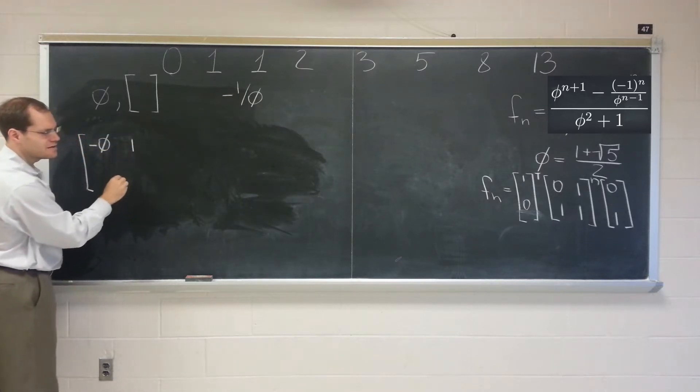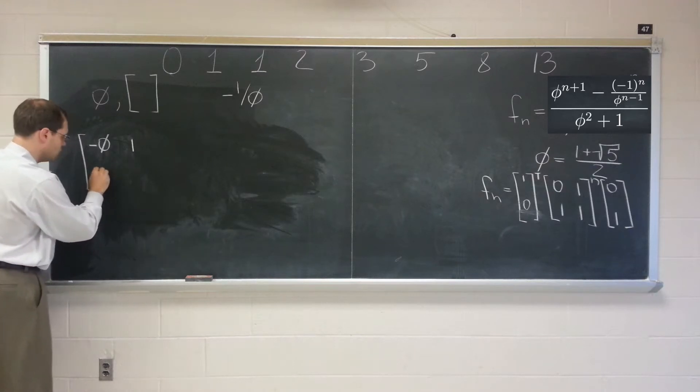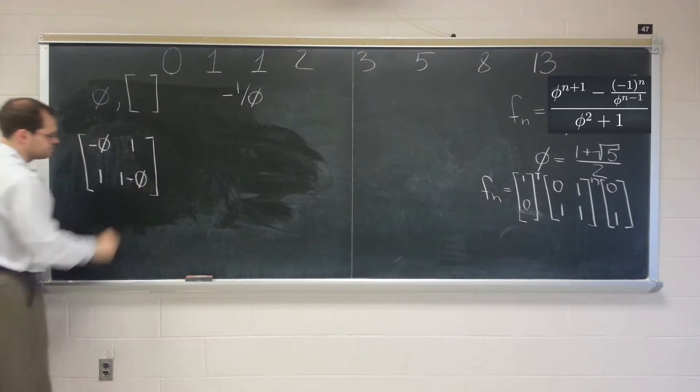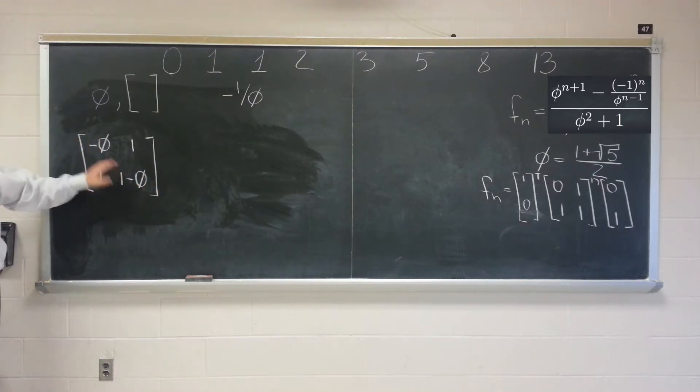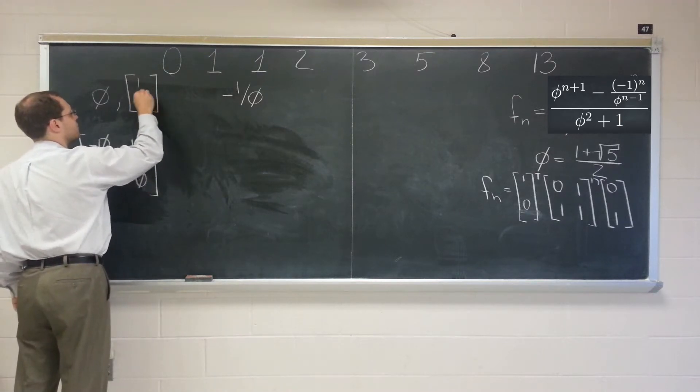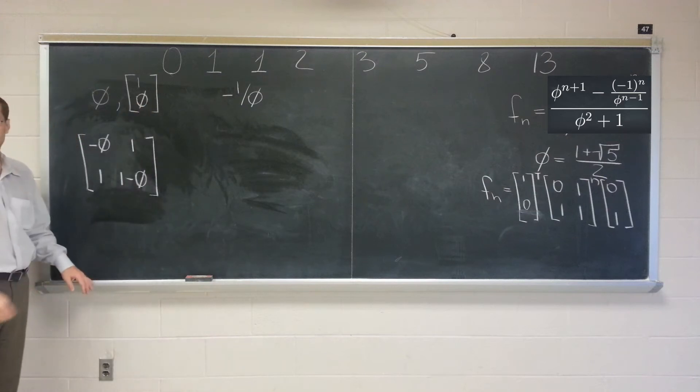1 and then 1 and 1 minus phi. So by just looking at the first row, we can tell that it's phi 1. I'm sorry, 1, phi. So you can see it from the first row. And you can confirm that in the second row, the combination 1, phi works as well. 1, phi. So that's the first eigenvector.